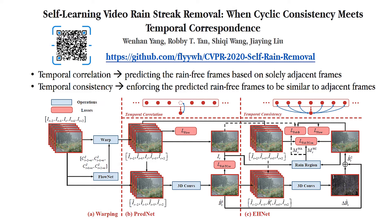To this end, a two-stage self-learned deringing network is designed. In the first stage, the model predicts the clean current frame based on only its adjacent video frames.